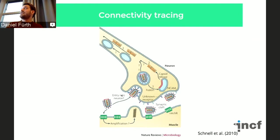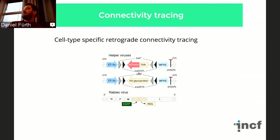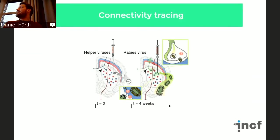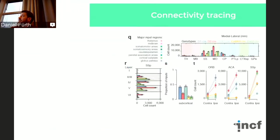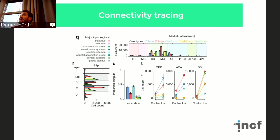The rabies virus enters the axon terminal and travels retrogradely up into the cell body where it expresses GFP. The helper viruses label the glycoprotein and also label with a fluorescent marker the primary population, so we can distinguish postsynaptic from presynaptic cells and count them. We did this in different Cre lines — here you see several brains reconstructed with roughly 50,000 cells giving input to about 2,000 neurons in the dorsal striatum, for D1 and D2 neurons. We can also trace connectivity in motor cortex by using a CaMKII Cre for excitatory neurons, GABAergic cells, and cholinergic interneurons in the striatum, building a network of how cells are wired.